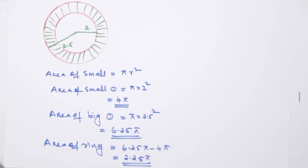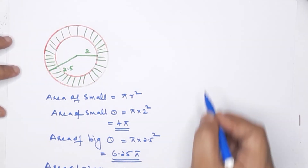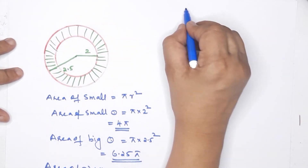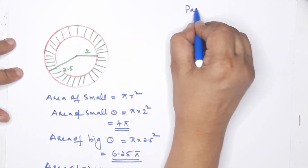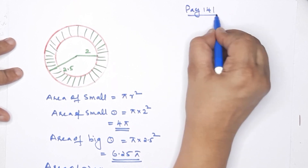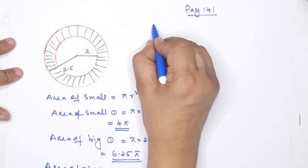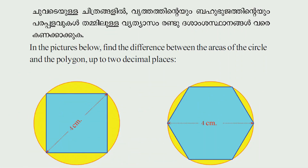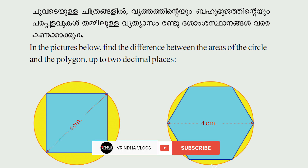Let's take a practice problem. Page number 141, first question. In the picture below, find the difference between the areas of the circle and the polygon, up to two decimal places.